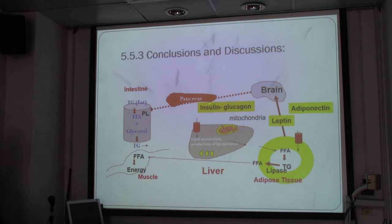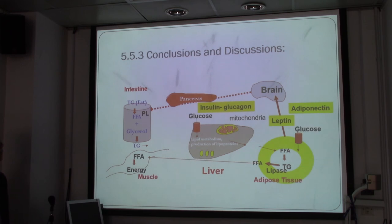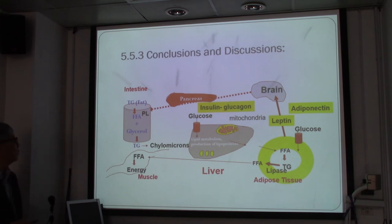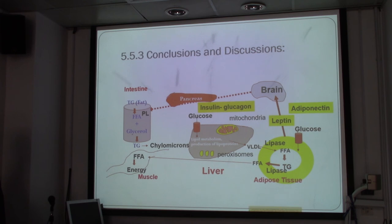Going back to video one: insulin facilitates glucose uptake and glucagon facilitates the production of glucose. The brain controls this system, and triacylglycerol forms chylomicrons in the blood. We still do not know everything about what is happening in this complex integrated system.